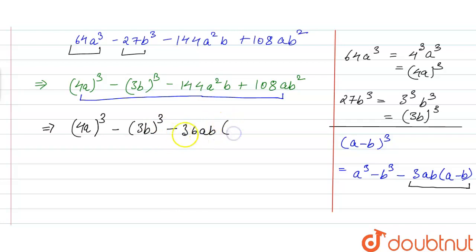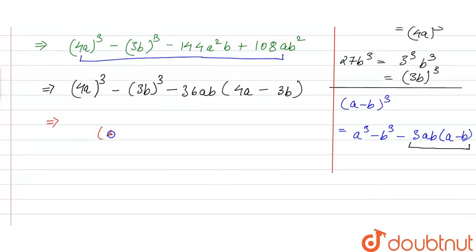If we take -36ab, then we have left with 4a because 36 times 4 is 144, and minus of, because here is minus so minus minus will be plus, and minus of we have left with 3b because 3 times 36 is 108.